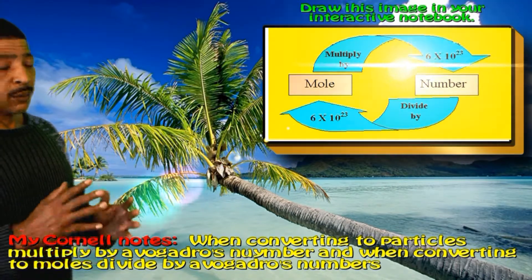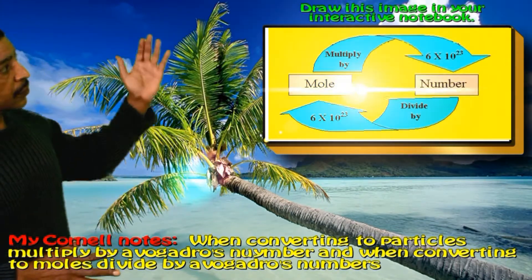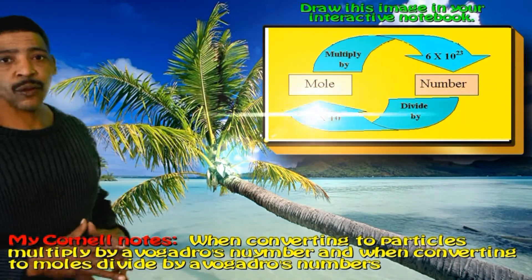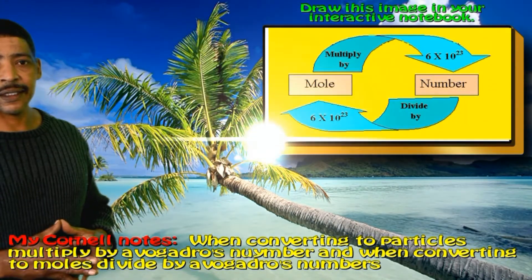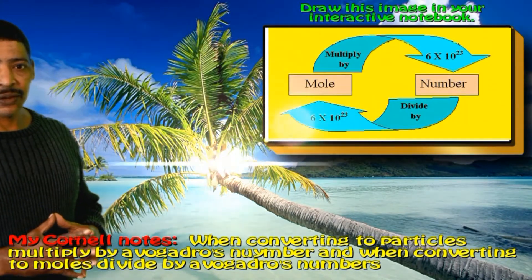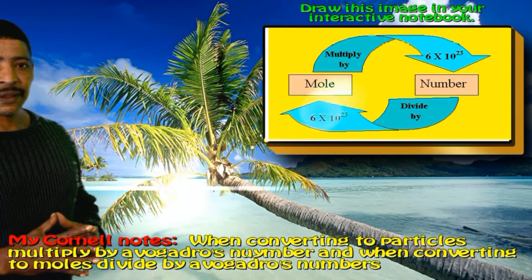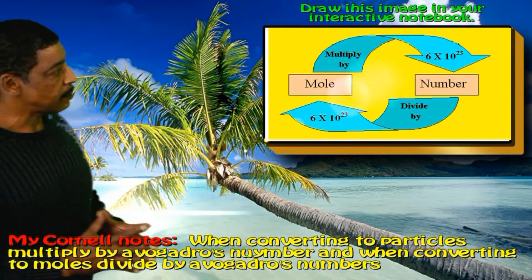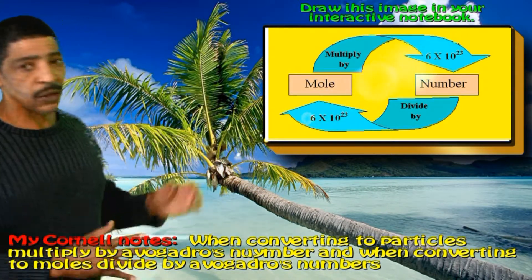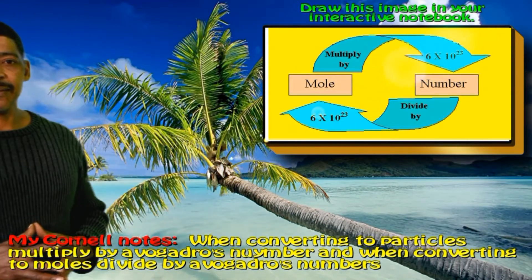When moving from moles to particles, we multiply by Avogadro's number. When moving from particles to moles, we divide by Avogadro's number.